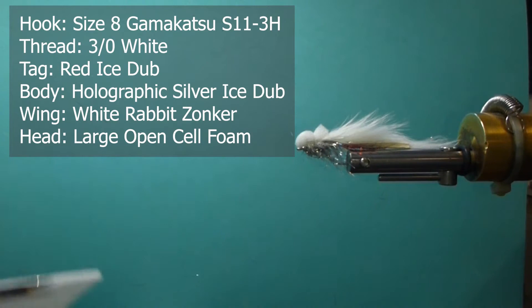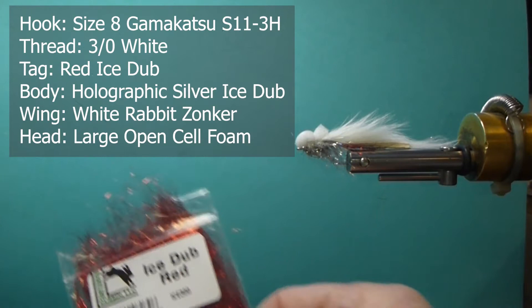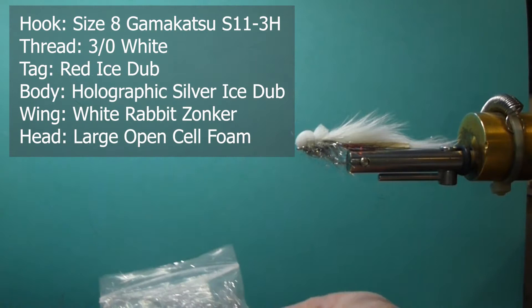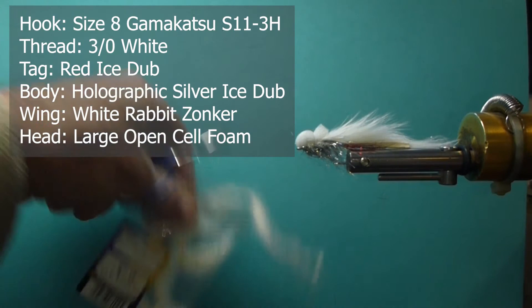The body I'm going to use for the tag, we're going to use some red ice dub. For the body, you can use some silver holographic ice dub, or you can also, another nice color is just a pearl ice dub, just tone it down a little bit, you don't have to be quite so bright. And we need of course, with the zonkers, we need rabbit zonker strips.